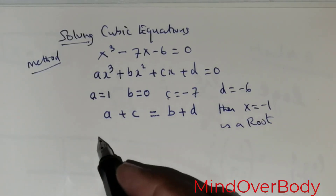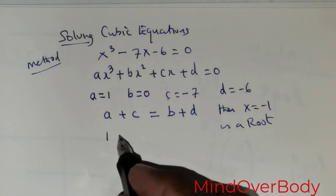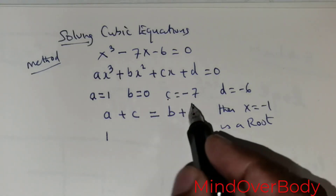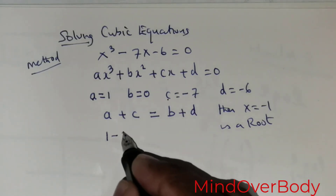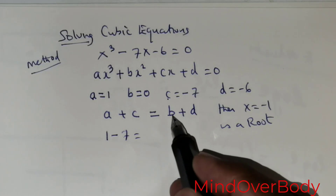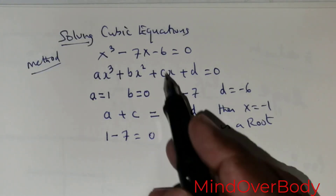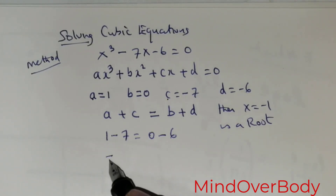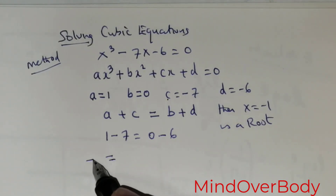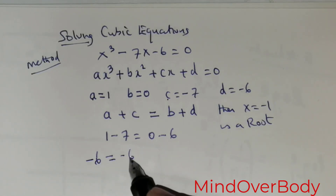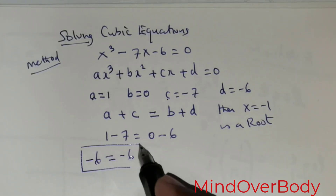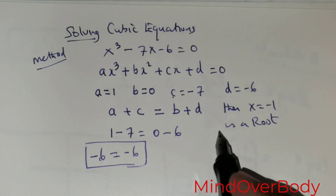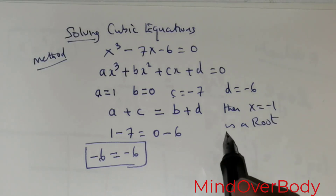Let us check that. a is 1, and c is negative 7, so a plus c gives negative 6. The value of b is 0 and d is negative 6, so b plus d is also negative 6. The left side equals the right side, so x equals negative 1 is definitely a root.